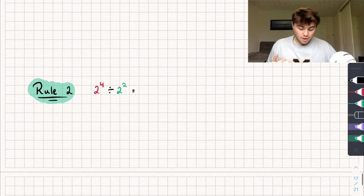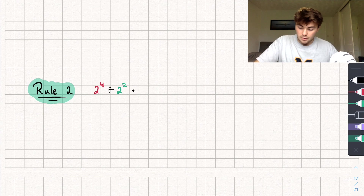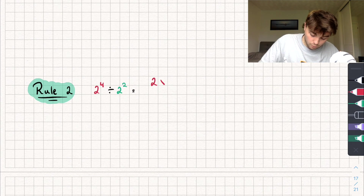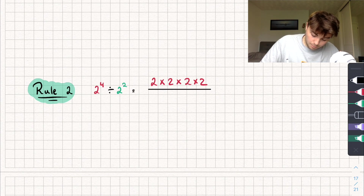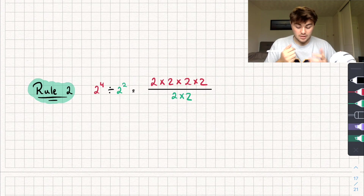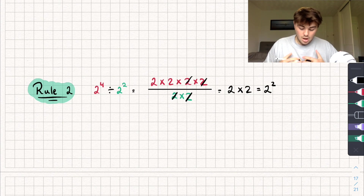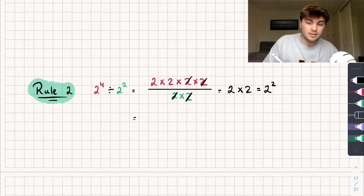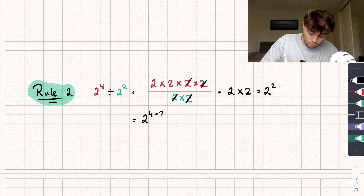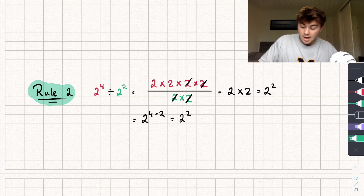The second rule is for dividing powers. We have 2 to the power of 4 divided by 2 squared. Writing it out: 2 to the power of 4 is 2 times 2 times 2 times 2, divided by 2 squared which is 2 times 2. We can cancel out two of the 2s, leaving us with 2 times 2 — just 2 squared. So what we're really doing is subtracting the indices: 2 to the power of 4 minus 2, which is 2 squared.